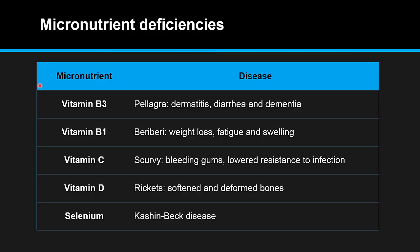This table shows the micronutrient deficiencies and the diseases that they cause. For example, lack of vitamin B3 causes pellagra, lack of vitamin B1 causes beriberi, lack of vitamin C causes scurvy, lack of vitamin D causes rickets, and lack of selenium causes Kashin-Beck disease.